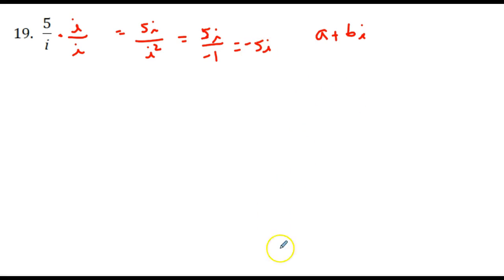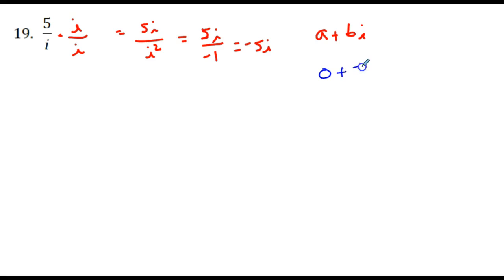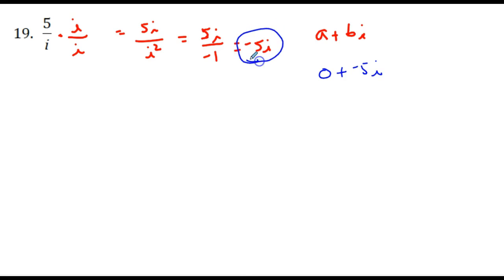If we wanted to write this in complex number form a plus bi, we'd have zero for the a plus negative 5i. But just writing your answer in this form is perfectly fine.